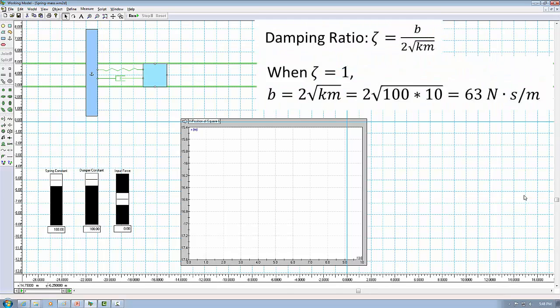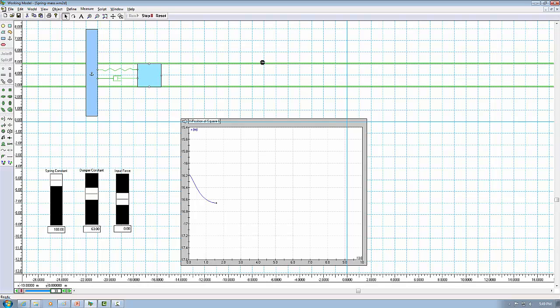That's when damping ratio equals to 1. Then the damping coefficient should be equal to 2 times √(km). Since the mass is 10 kg and the spring constant is 100 N per meter, it gives you a damping coefficient about 63 Ns per meter. So let's change the damping coefficient to 63. So you can see it is an exponential decay.